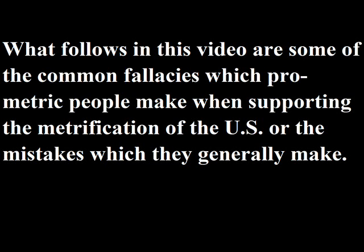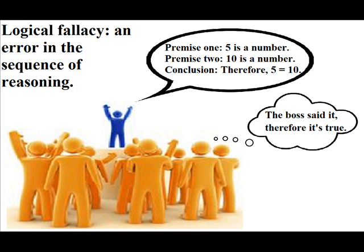What follows in this video are some of the common fallacies which pro-metric people make when supporting the metrification of the U.S., or the mistakes which they generally make. For those who don't know what a logical fallacy is, it is an error in the sequence of reasoning which means that the conclusion does not follow in deductive logic, or does not strongly follow in inductive or abductive logic, which results in a bad argument and an unreliable conclusion. It is a break in one's logic, if you will.